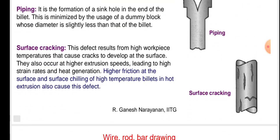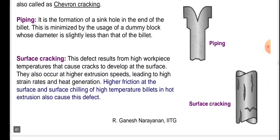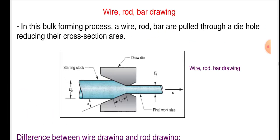Surface cracking: This defect results from high workpiece temperature that causes cracks to develop at the surface. They also occur at higher extrusion speeds, leading to high strain rates and heat generation. Higher friction at the surface and surface chilling of high temperature billets in hot extrusion also causes this defect. The third figure shows surface cracking.